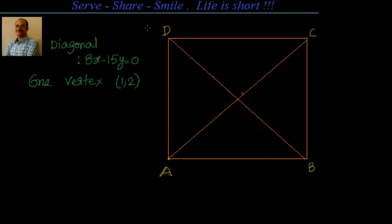Let's look at this interesting example. We have been given a square, out of which the information given to us is one diagonal equation and one vertex. We have to find out the equation of sides on which this vertex lies. So let's put the vertex at A as (1, 2) and we have been given a diagonal 8x minus 15y equal to 0.